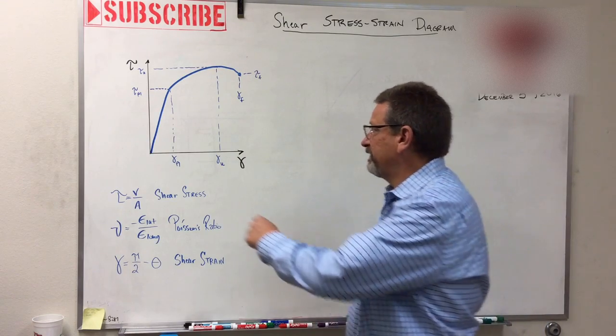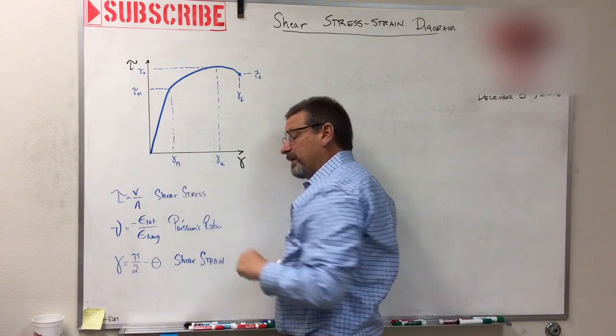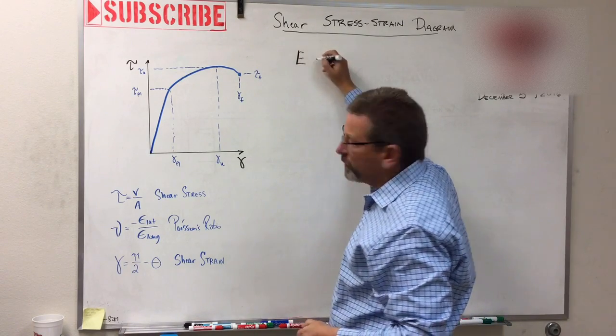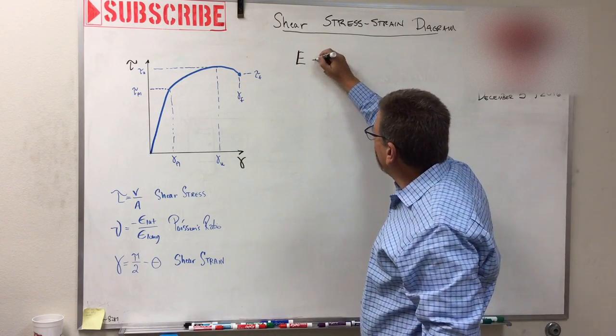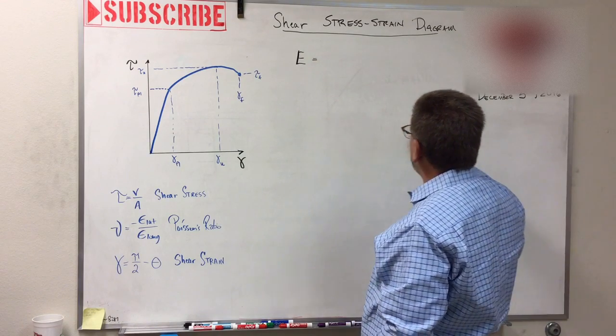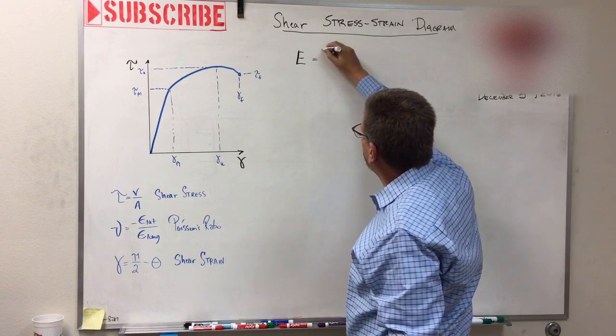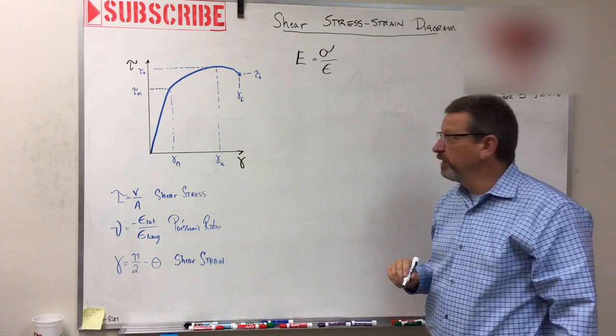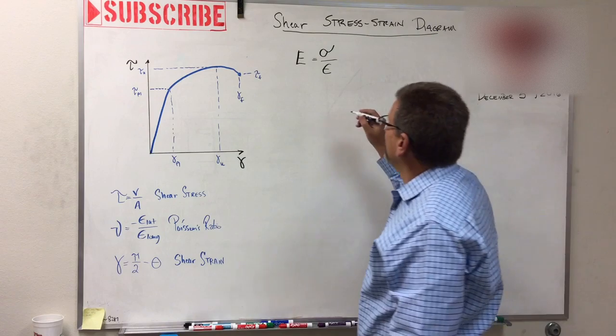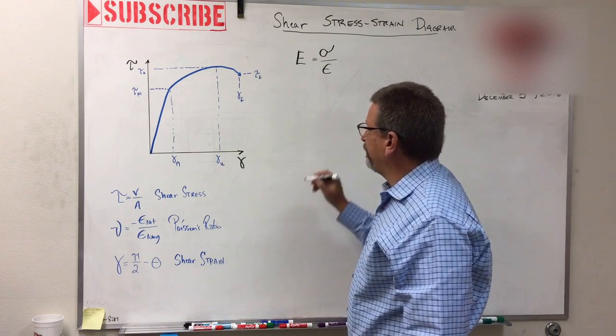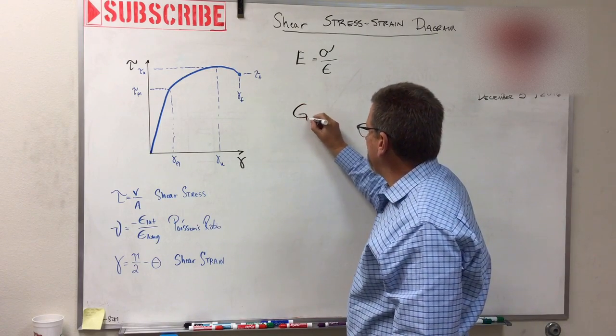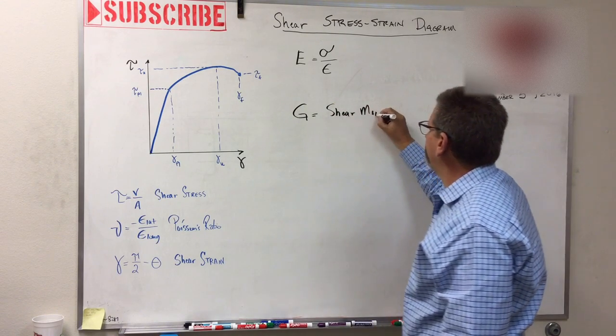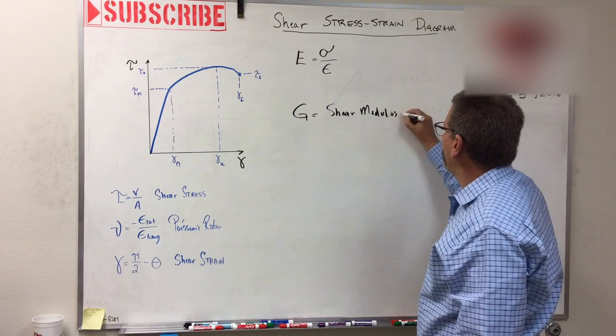So one of the things that we can do, just like we did on the other graph, is in this region right here. Now the other graph we had E. Do you remember E? The modulus of elasticity was equal to rise over run. Remember on our other graph, rise was stress and the run was epsilon for strain.